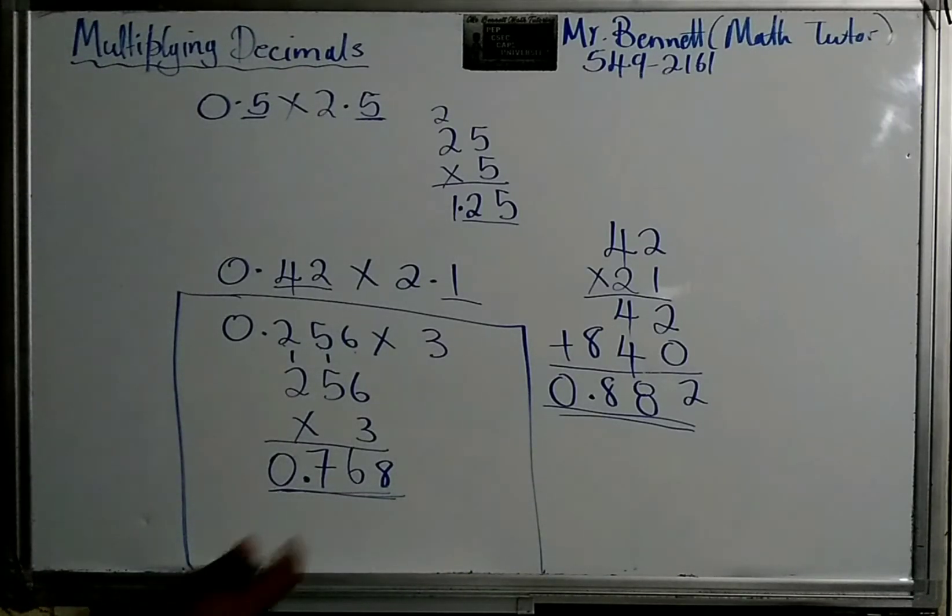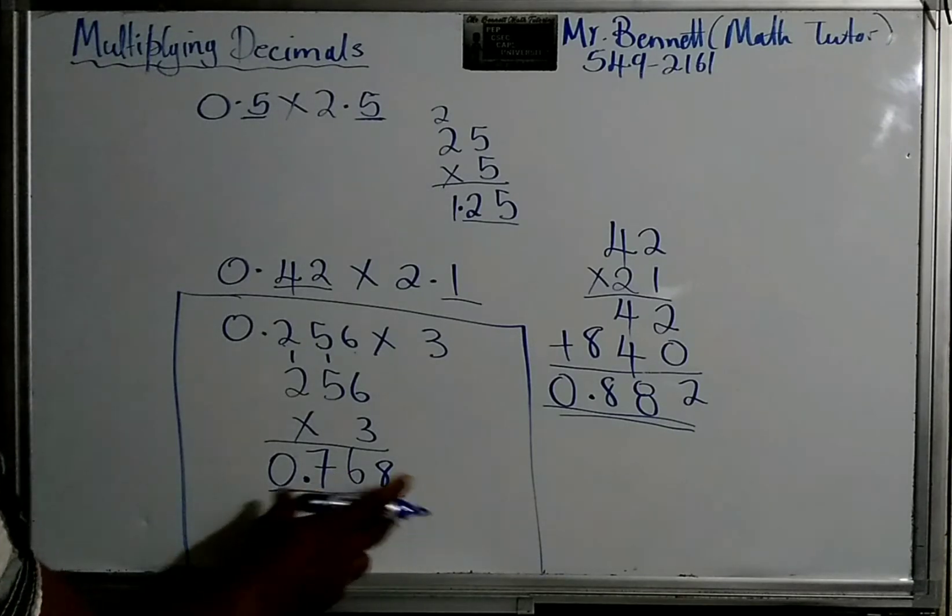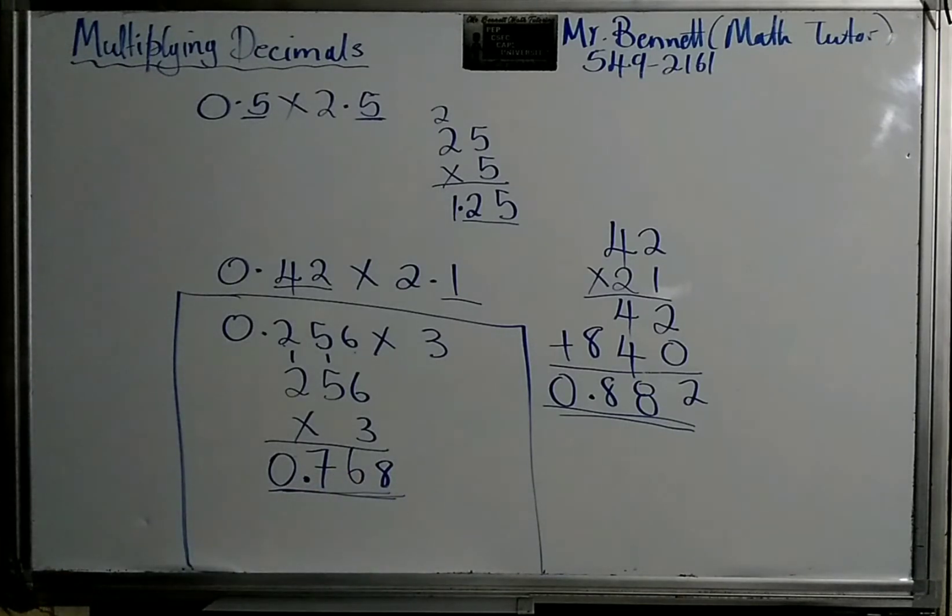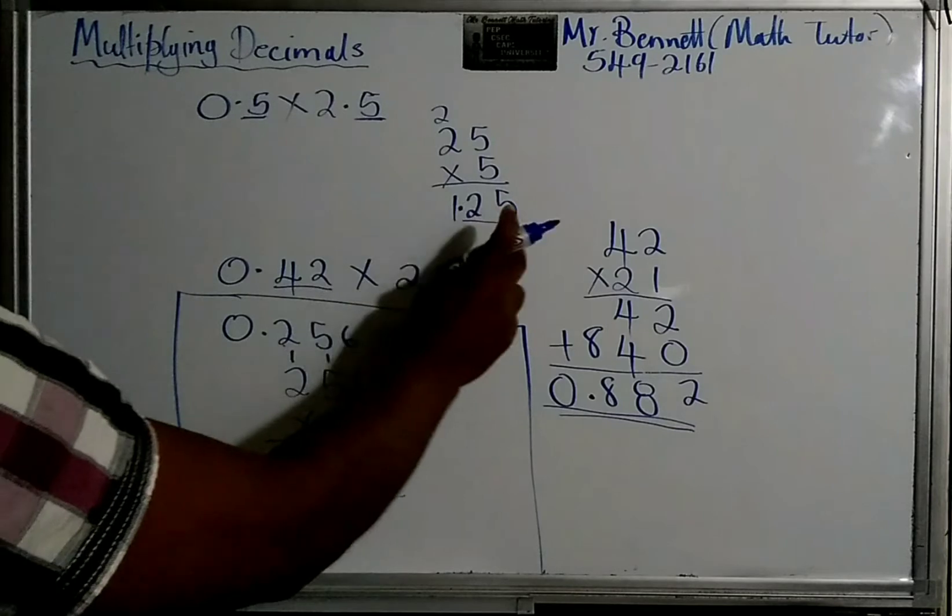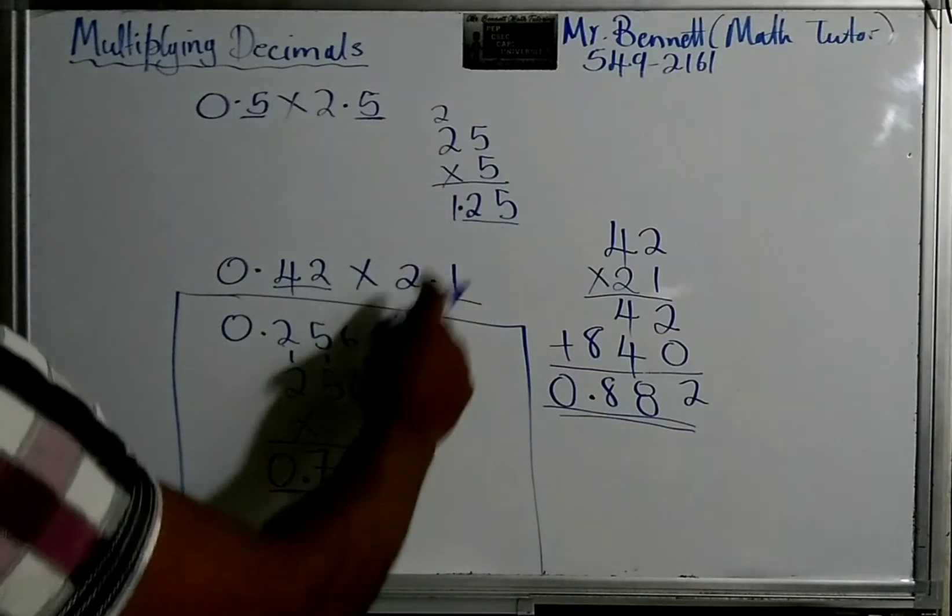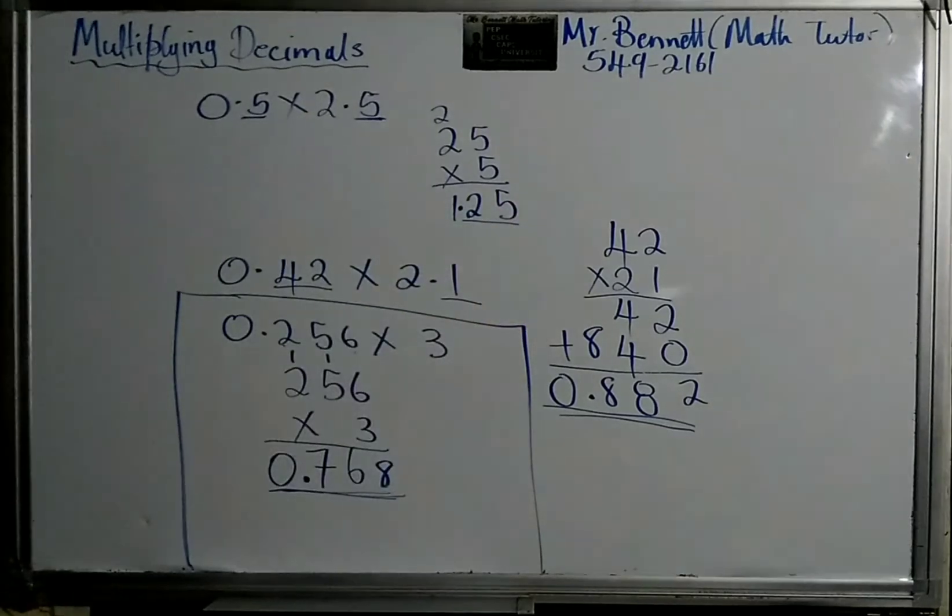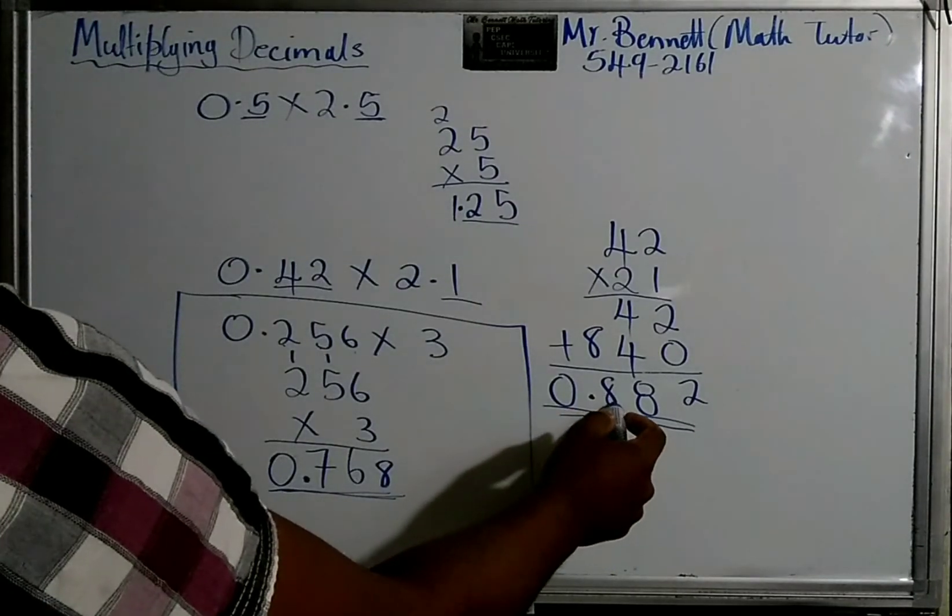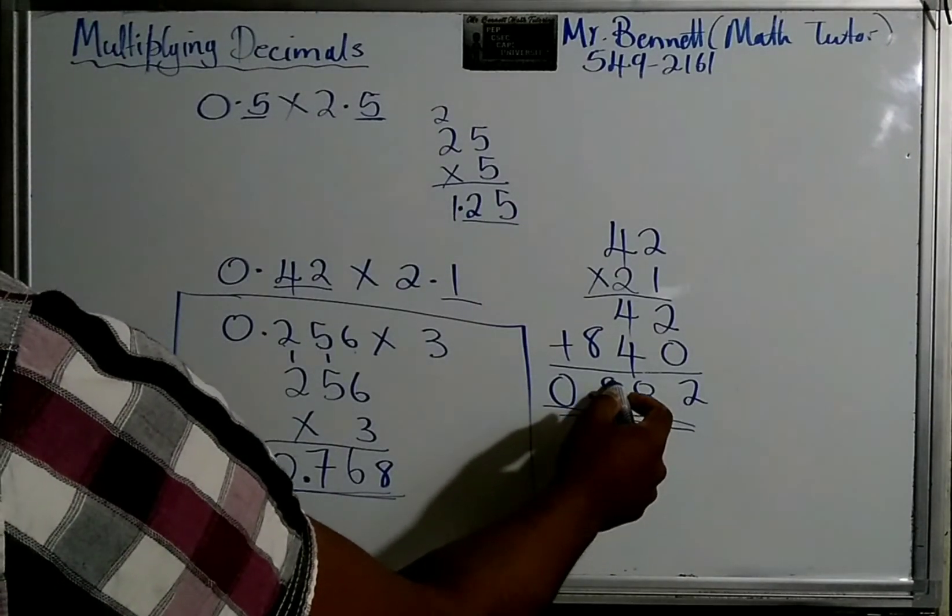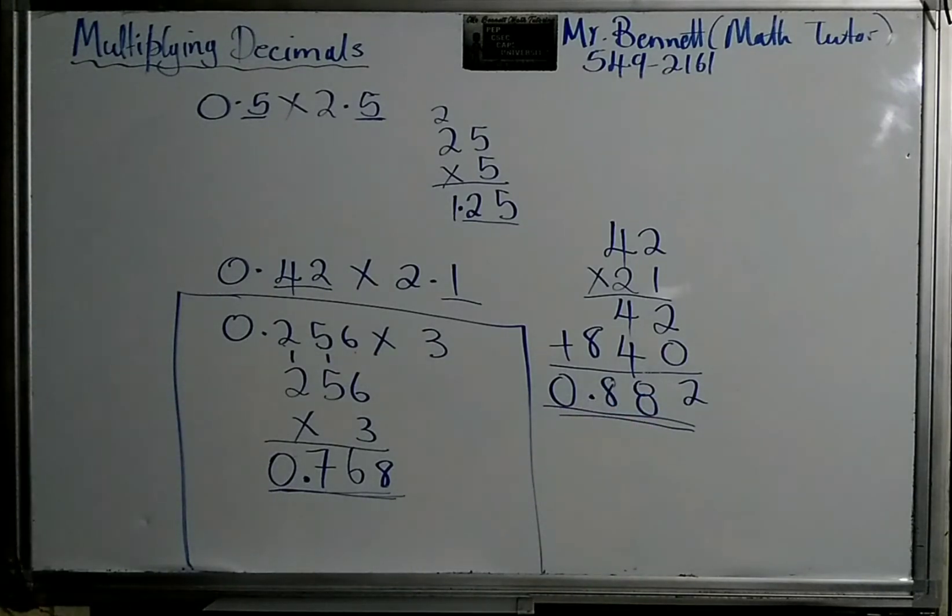And remember, this is a fraction, right? This is less than 1. That's what a decimal is. After the decimal point, the value is less than 1. So this is a quarter. Basically, one and a quarter. This is closer to 1 because it's 0.8 and so on.